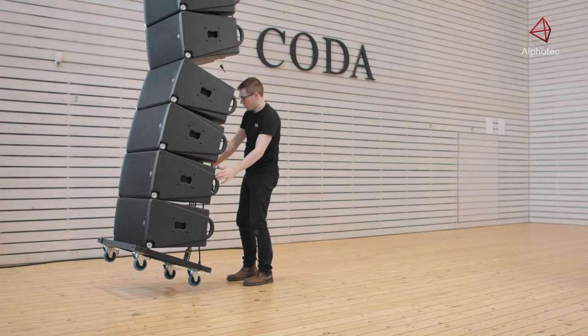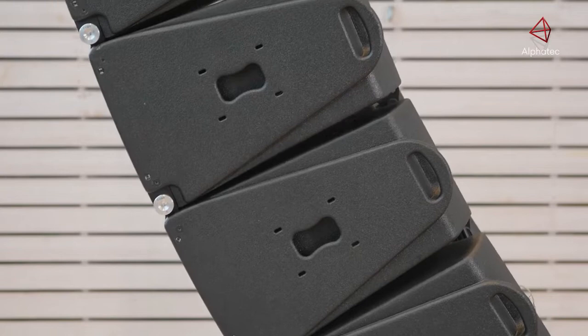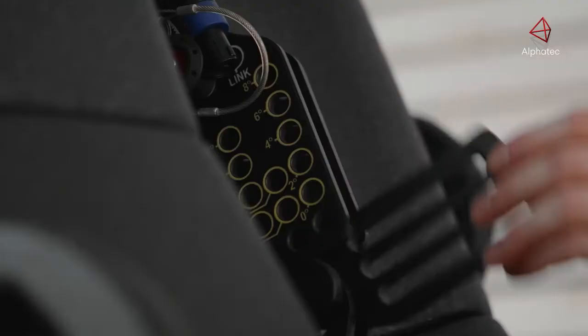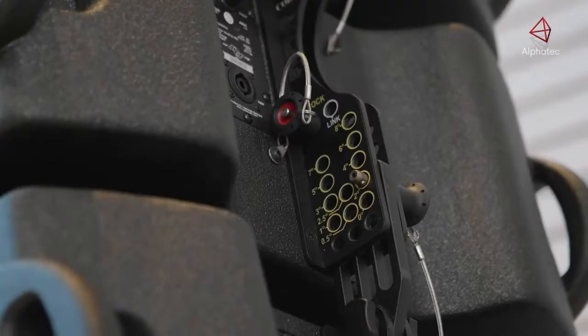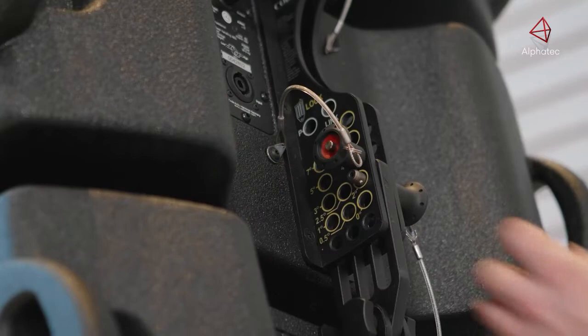Pull the cabinets back whilst lowering the array. Keep lowering until the two cabinets meet. Lift the spine at the join and insert the white flying pin. Raise the array and insert the yellow locking pin to complete.